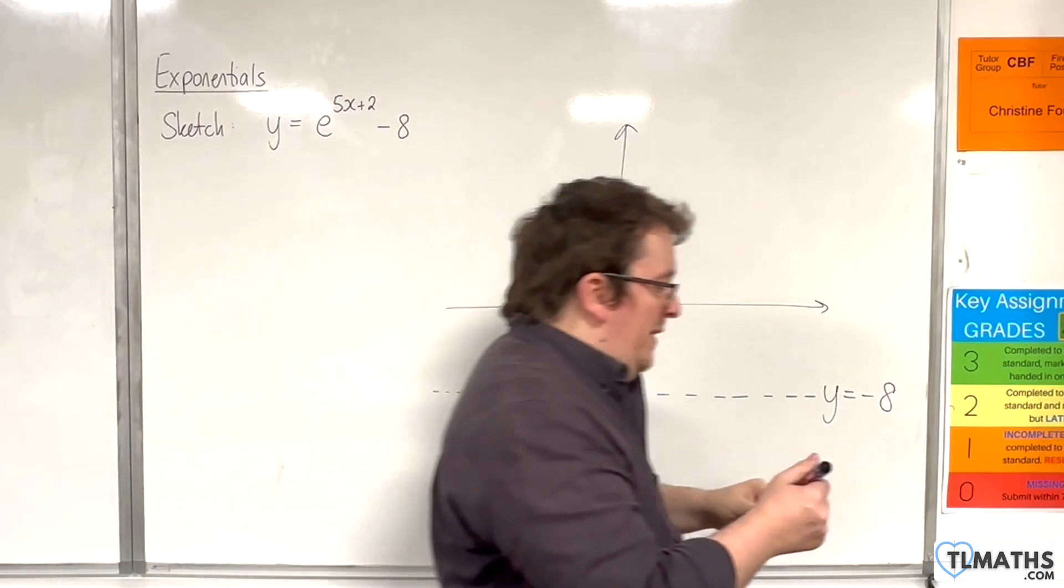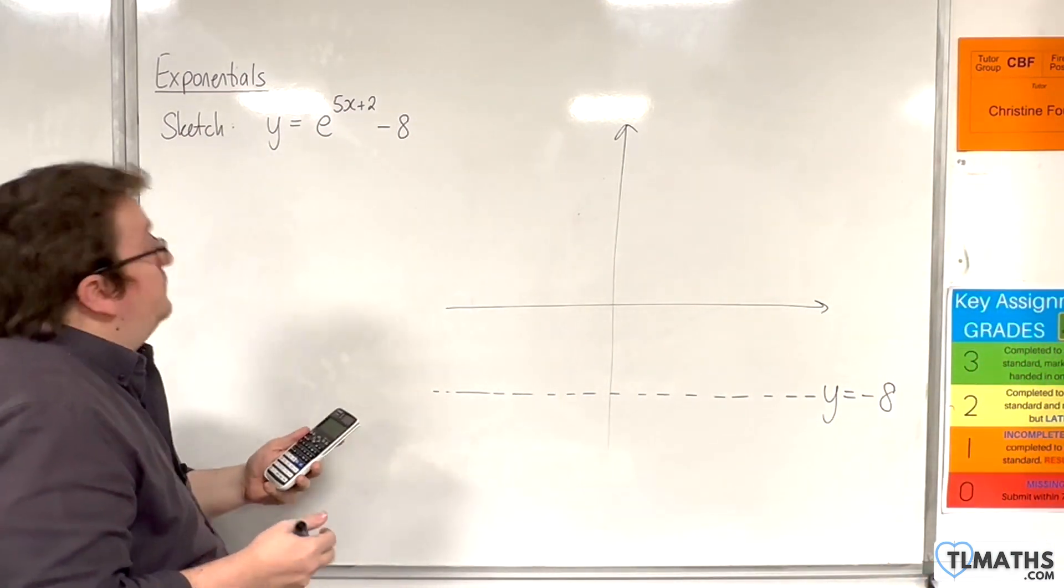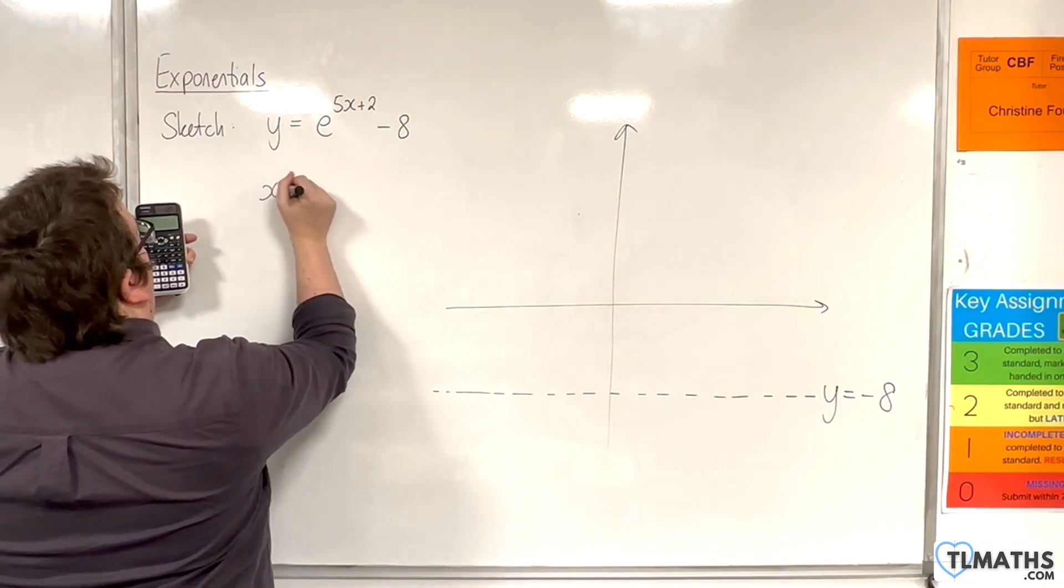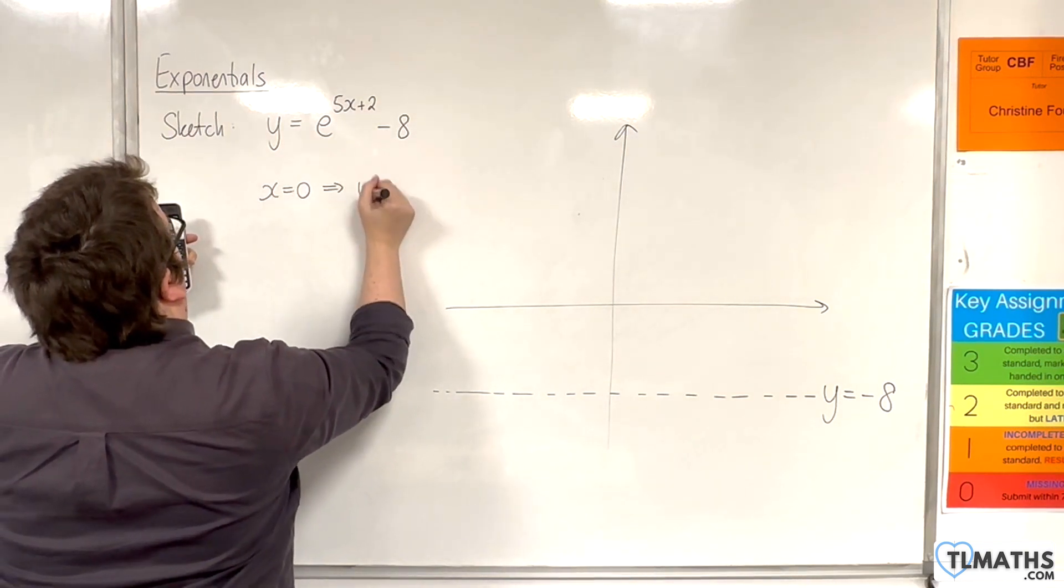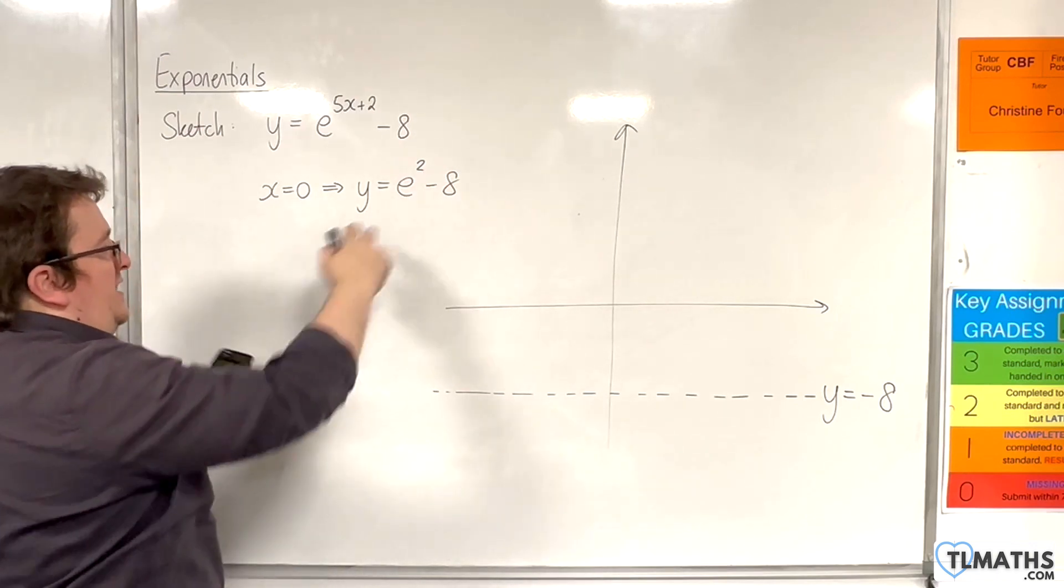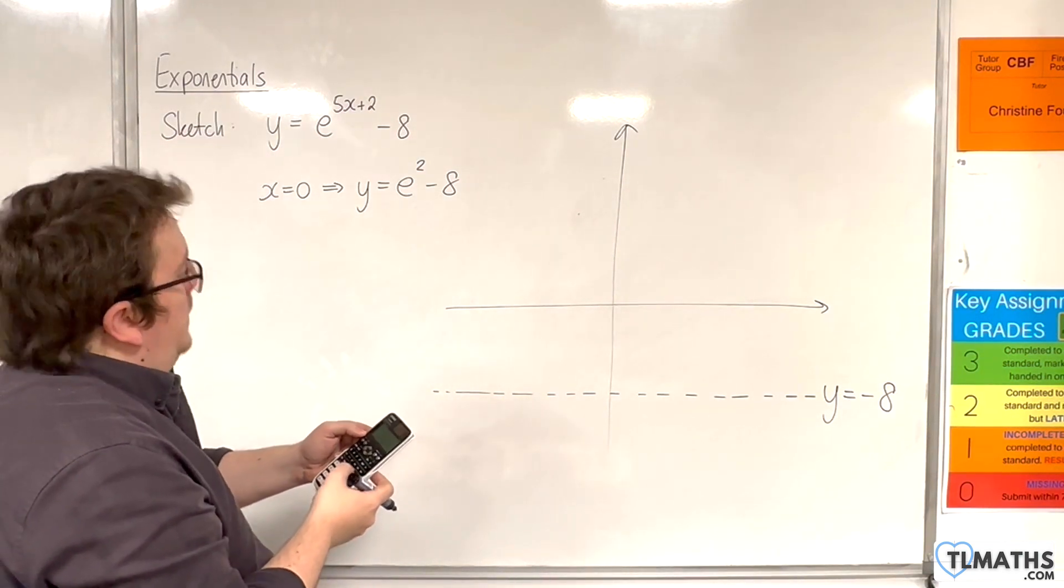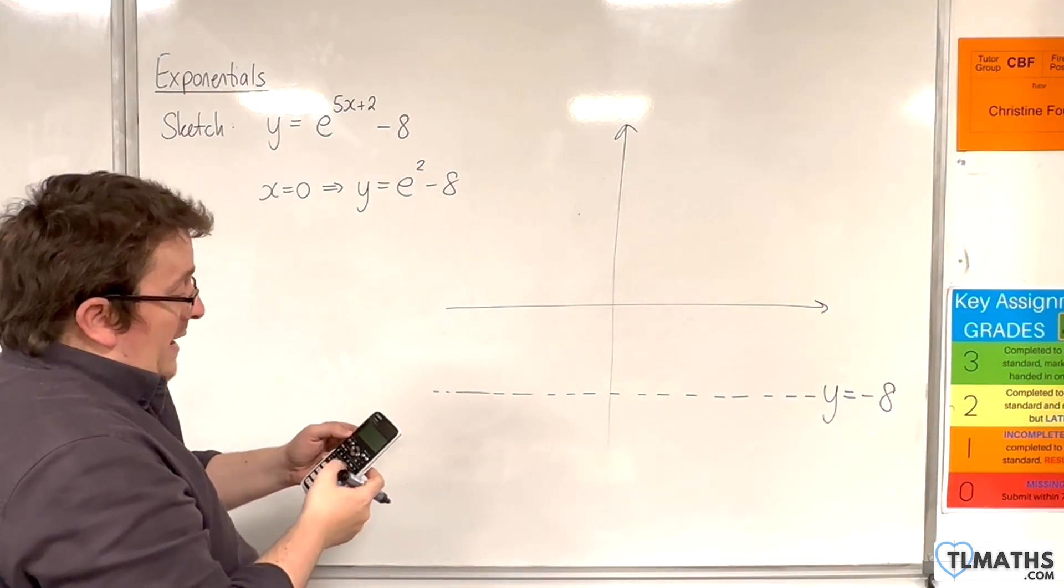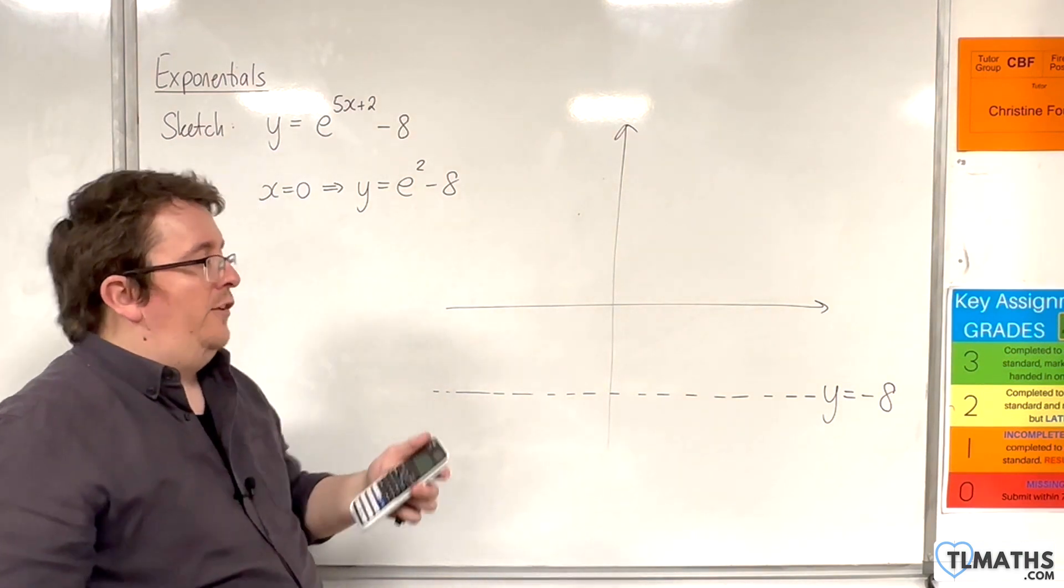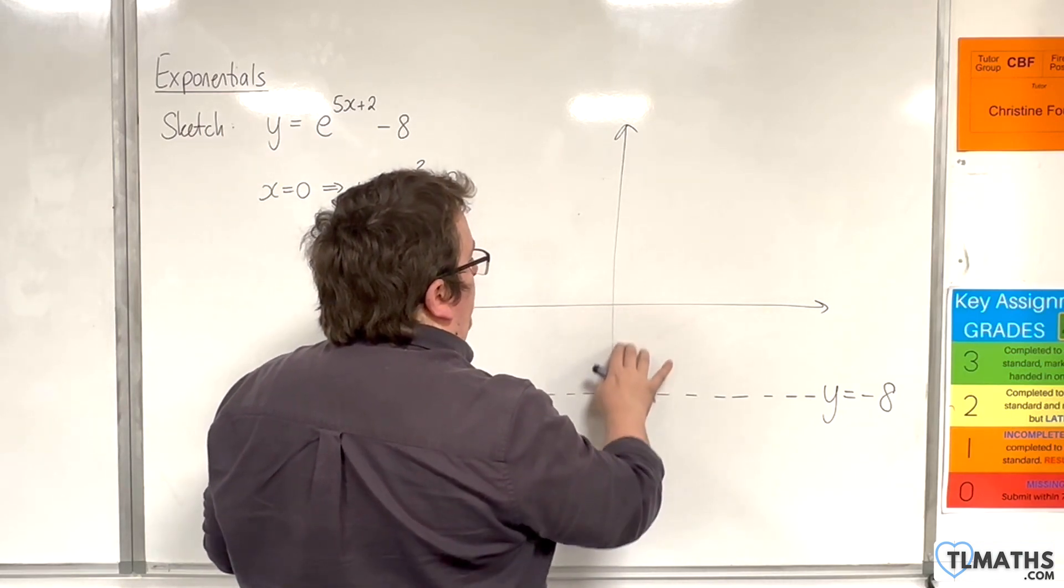Now, I'm not 100% sure what that's going to be, so I'm going to go to my calculator, and we're going to take a look at when x is 0, y is e squared take away 8. So I'm going to plug that into my calculator. So shift, then the ln button, e squared, then take away 8, and we get minus 0.61. So that means it's crossing the y-axis somewhere here.